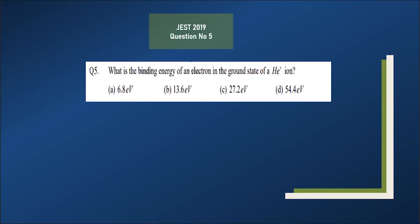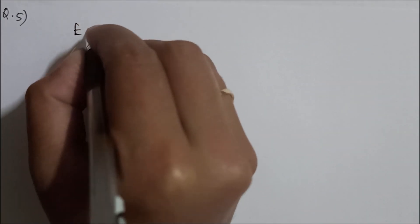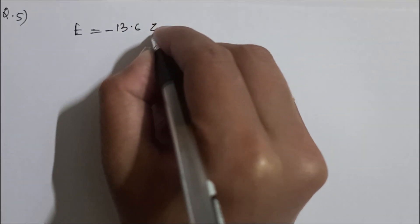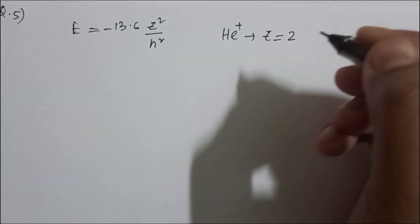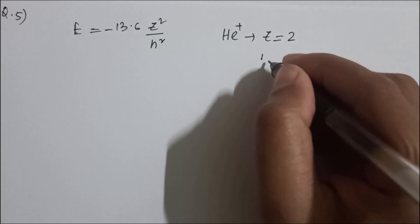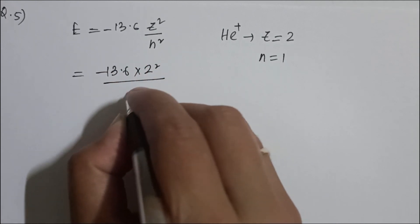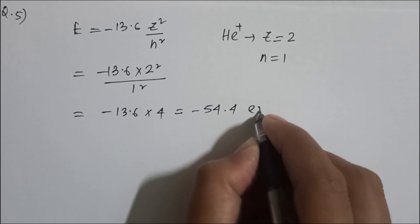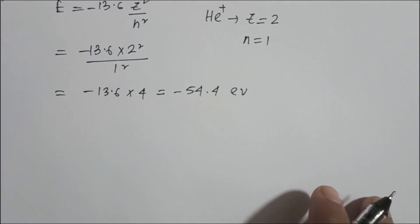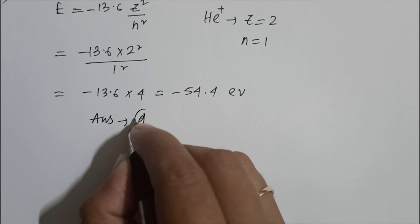Question 5: what is the binding energy of an electron in the ground state of the He⁺ ion? For a hydrogen-like atom, E = −13.6·Z²/n² eV. For helium, Z = 2, and for the ground state n = 1. So E = −13.6 × 4 / 1 = −54.4 eV. Taking the magnitude, the binding energy is 54.4 eV. The correct option is D.